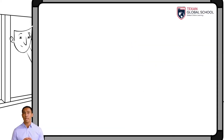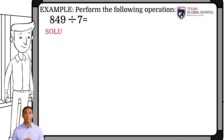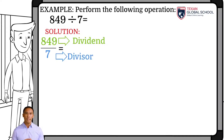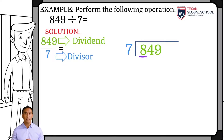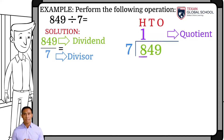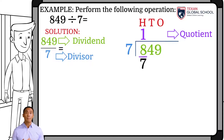In this last example, we will be dividing 849 by 7. Draw the galley and put the dividend 849 inside the galley and the divisor 7 outside. Since the first digit 8 of the dividend is greater than the divisor 7, we can see that the divisor is contained in the dividend once. This result is placed in the quotient in the 100's column. Now, multiply this 1 of the quotient by the divisor 7, and place the result below the dividend. Subtract 8 from 7, and the 1 is placed in the same column of the 100's.